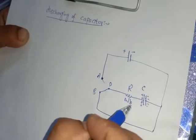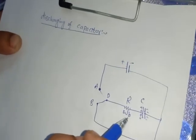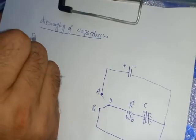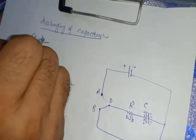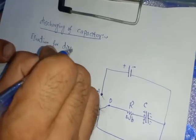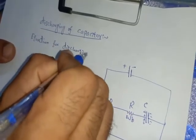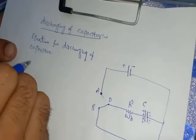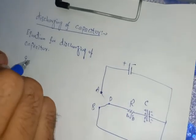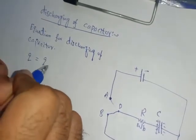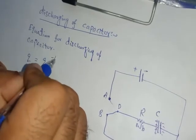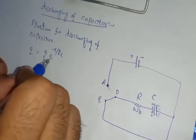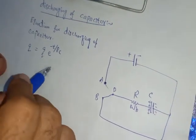First of all, we should know the equation for discharging of capacitor. The equation for discharging of capacitor is Q equals Q naught E power minus T divided by RC. So it's a little bit different from the charging equation.